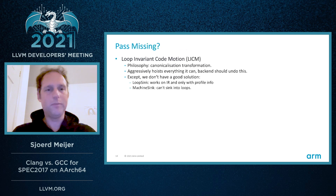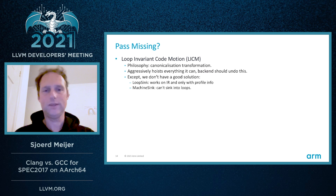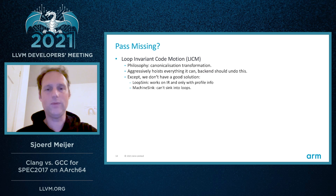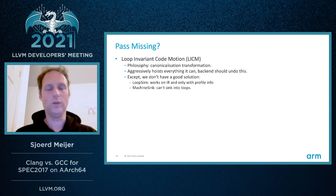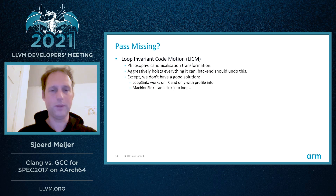There's also something not working for us related to loop invariant code motion. The philosophy is that it's a canonicalization transformation, which means it aggressively hoists everything it can. If that is not optimal, it's the backend's responsibility to undo this — except we don't have a good solution there. We have loop sink, an IR pass that works only with profile information, and a backend pass machine sink, but it can't sink instructions back into loops. So we're missing something. This occurs in SPEC but also in many other codebases for us, and is a big problem.